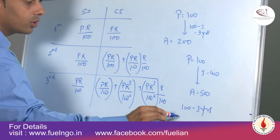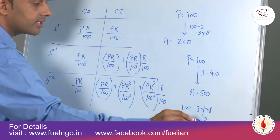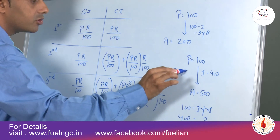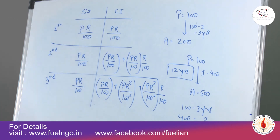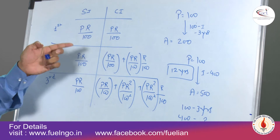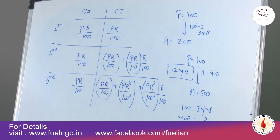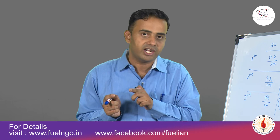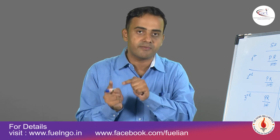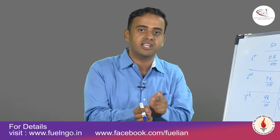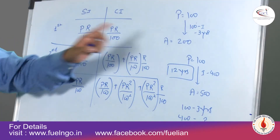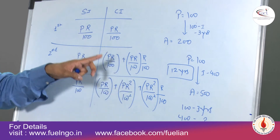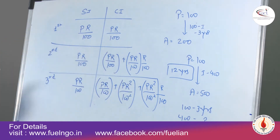If 100 rupees of interest is obtained in 3 years, then 400 rupees of interest will take 12 years. We can do this because simple interest at the end of every year remains the same — it does not change. So 100 rupees interest in 3 years means 400 rupees interest in 12 years. The correct answer is 12 years.